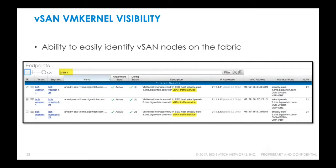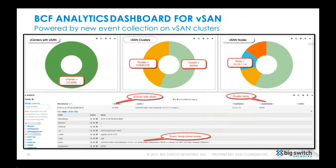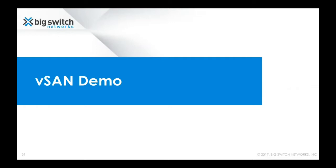Once connected, vSAN nodes automatically appear and are easily identifiable in BCF as endpoints. Event information related to vSAN hosts and clusters is available in BCF's Fabric Analytics module, where you can drill down into detail or filter by date and time interval, including a breakdown of events by vCenter, cluster, or node.